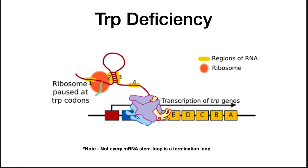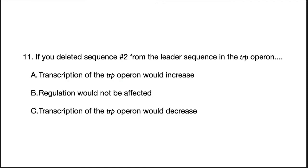The 2-3 loop forms preferentially because it can form before region 4 is even transcribed. One common misconception that students have is that every stem loop in the mRNA is a terminator sequence. This is not true. A Rho-independent terminator is a special stem loop structure followed by a run of U's. Therefore, in this case, transcription is not terminated when tryptophan is at low concentration and the genes are synthesized.